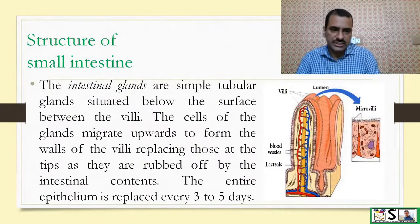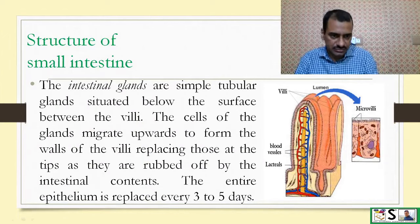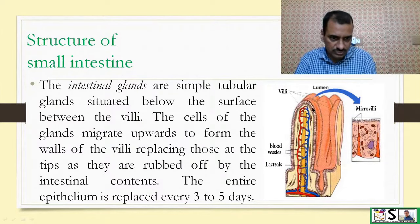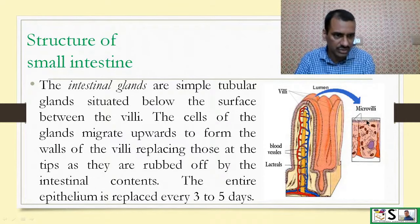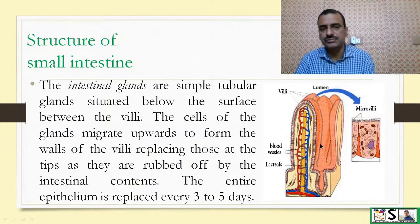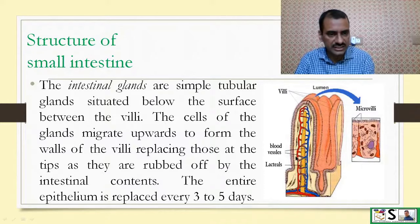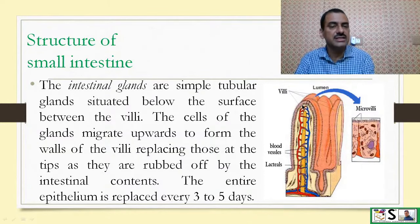Here you can see these are the villi, and on the free border of the enterocyte there are microvilli. These are the lacteals or lymph vessels, and this is the blood capillary network.